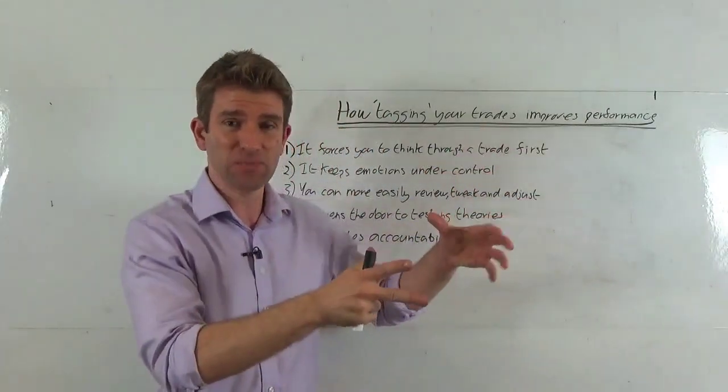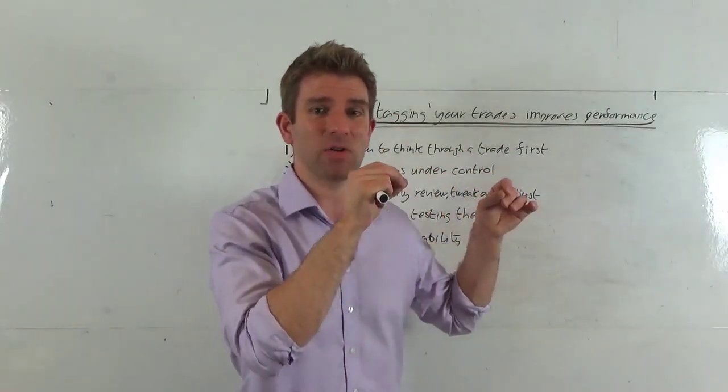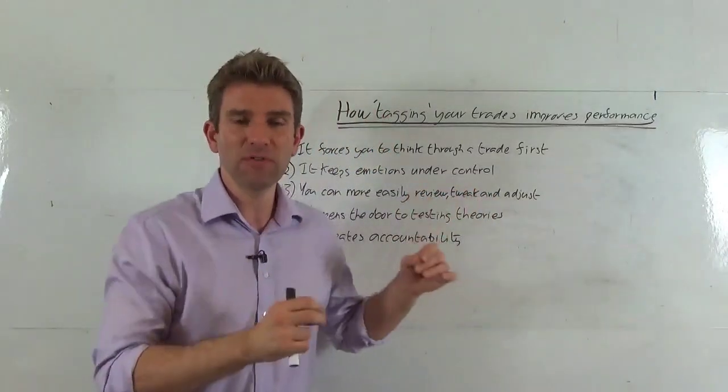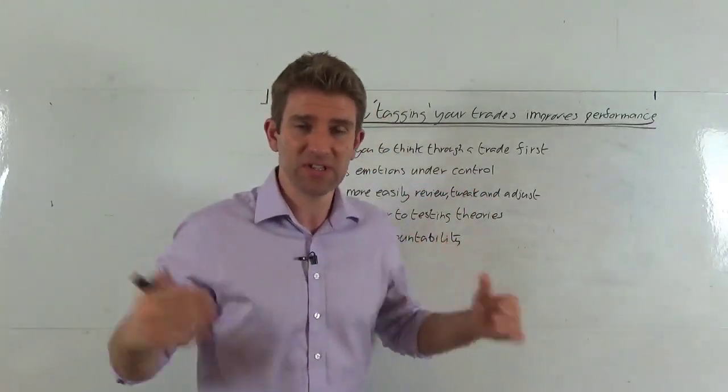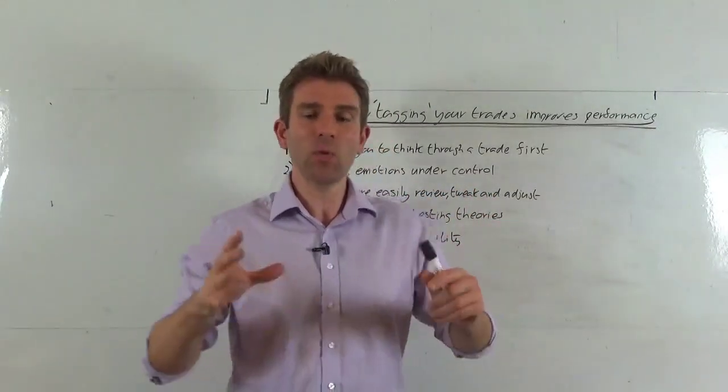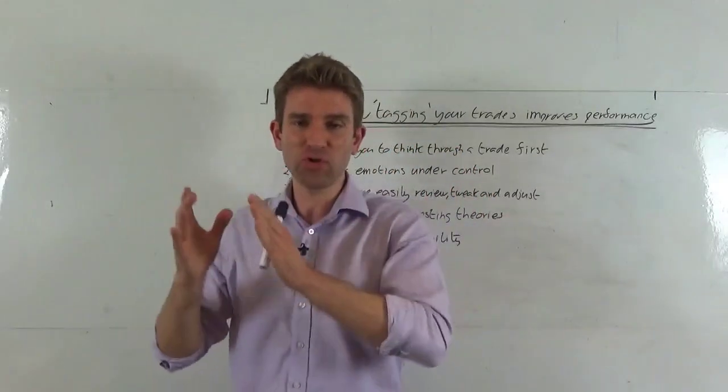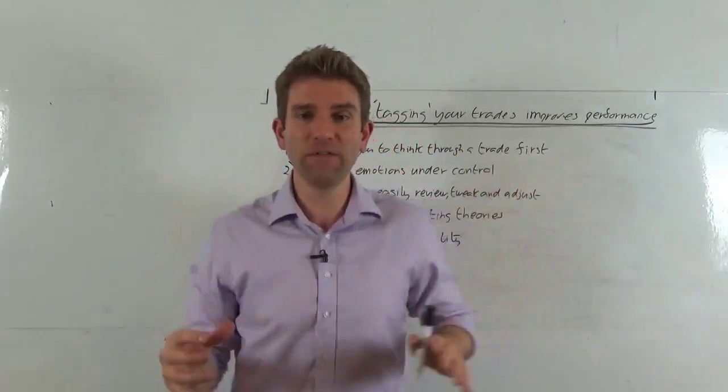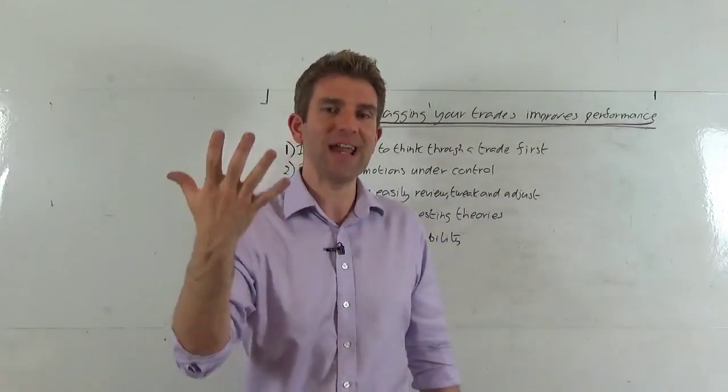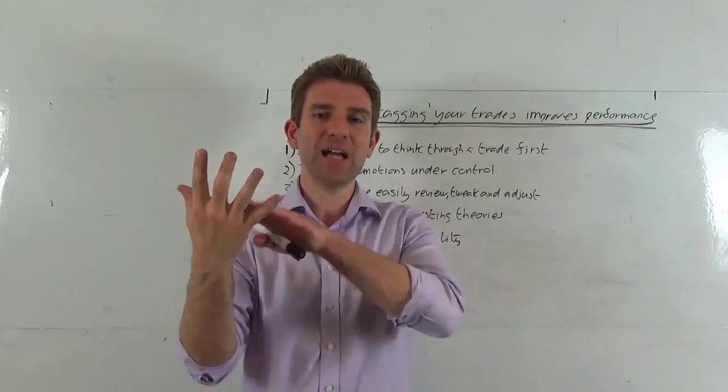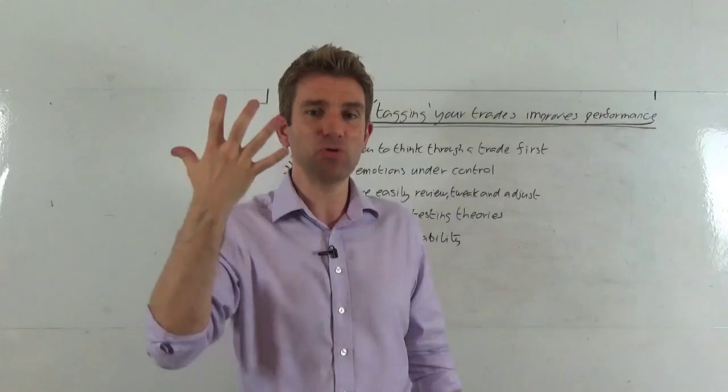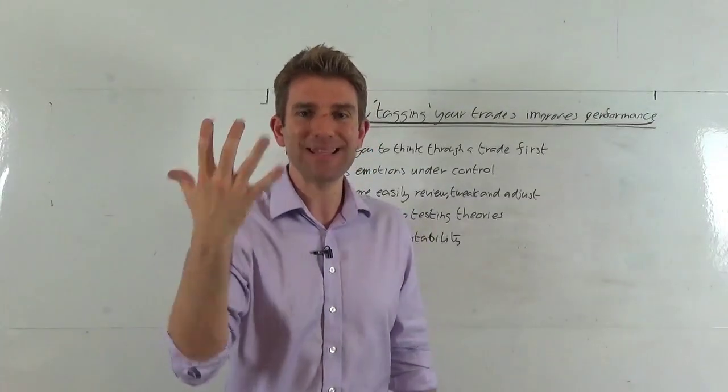You take a first pullback trade, that gets tagged as number one. You take a mean reversion trade strategy, that's tagged as number two. In other words, you create all your different trading strategies. Let's say you've got five. Now you have five tags. Each trade you take needs to be tagged with one of those five things. You can't go outside of it, and it needs to be tagged with those strategies only.